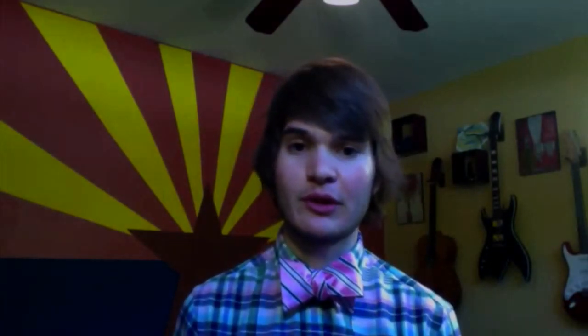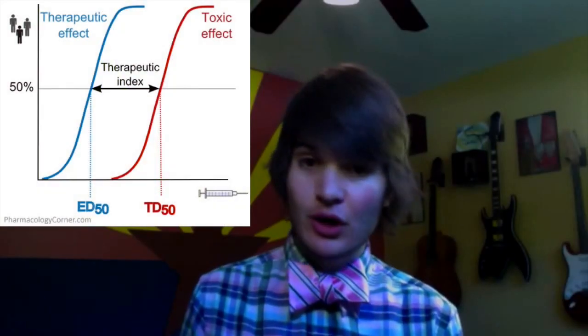How do we know how effective a drug is? The first thing we do is form a dose-response curve — milligrams of drug per kilogram of body weight plotted against the effect we want to see. To determine how much is safe, we administer drugs to animals and look for two things: how much drug causes 50% of the animals to experience the desired effect.